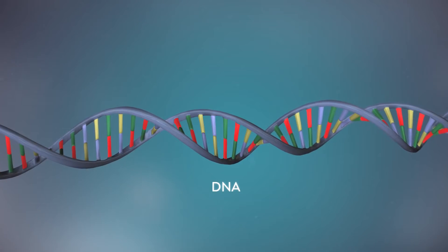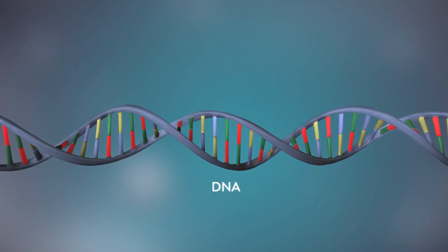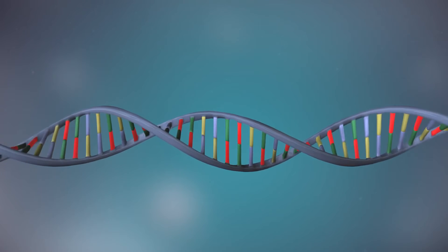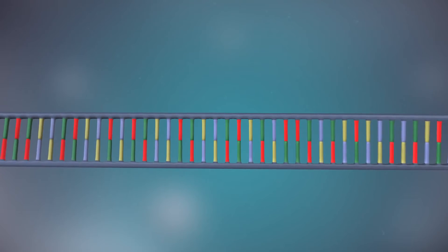DNA is a molecule made up of two strands, twisted around each other in a double helix shape. Each strand is made up of a sequence of four chemical bases, represented by the letters A.